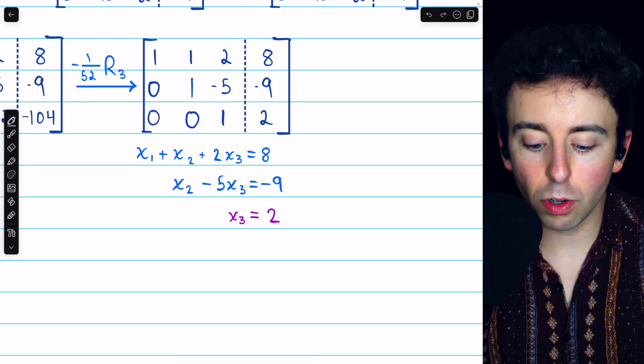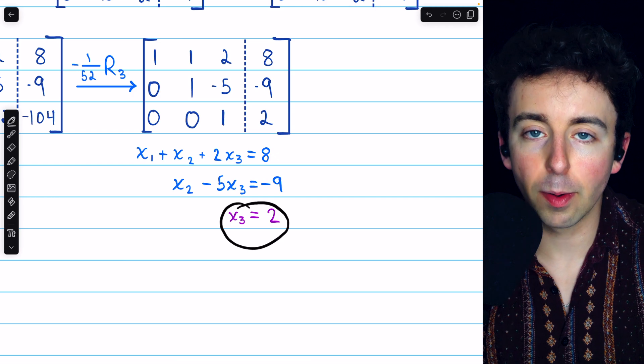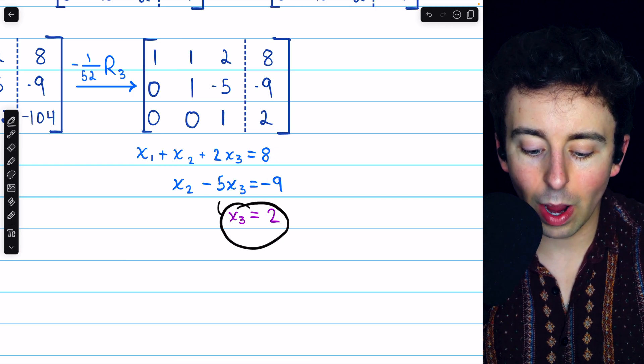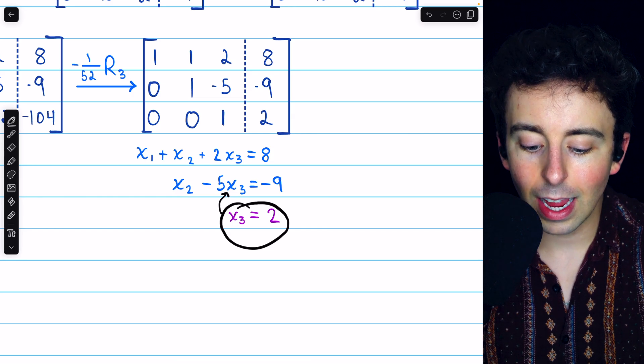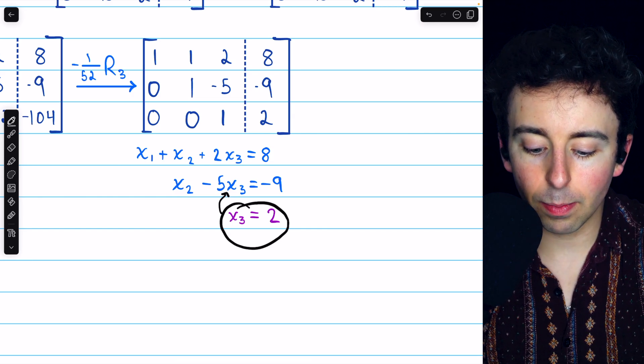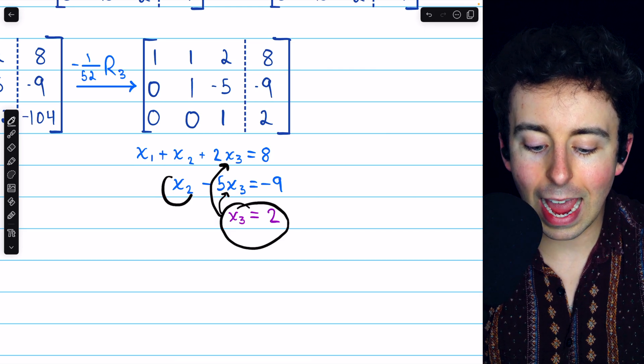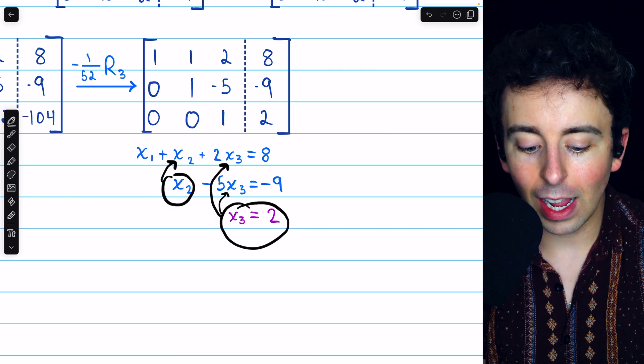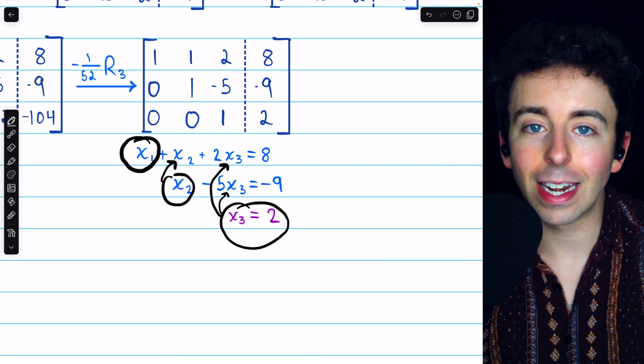Now the back substitution process is to take this variable whose value we know and plug it into the previous equation. So we're going backwards. And then that equation will tell us what x2 is. So then we can plug our value for x3 and x2 into equation 1, that first equation, and thus solve for that final remaining variable.